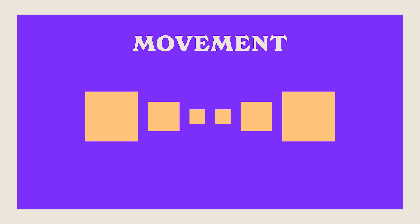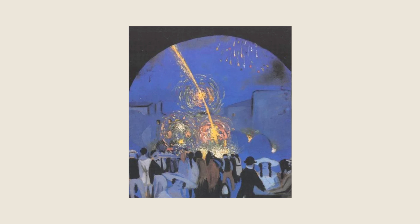Movement in design embodies the essence of motion and action, delivering an impression of dynamic energy. By skillfully employing techniques like lines, curves, and suggested movement, you can breathe life into your design and captivate the viewer's attention. Implied movement comes to life through strategic element placement and the utilization of vibrant imagery. Fiesta in Figueres, created by Salvador Dali, exemplifies the masterful use of color to evoke movement — vibrant yellows juxtaposed against a deep blue backdrop establish a focal point, with leading lines guiding our gaze.